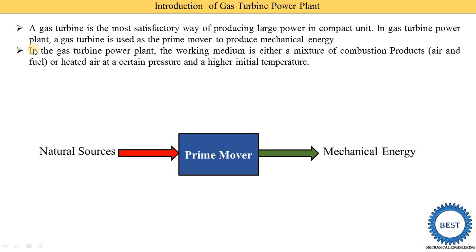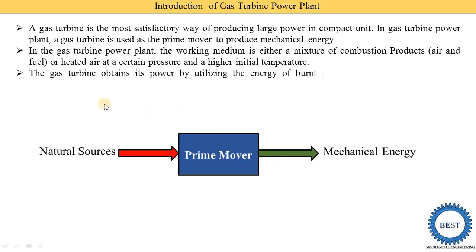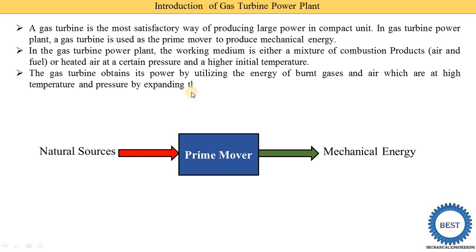When we burn the fuel, some gas is produced — that is the mixture of combustion products — or heated air at certain pressure and higher initial temperatures. As a natural source, we supply heated air or air and fuel, and they are converted into mechanical energy. The gas turbine consists of a number of rotary blades, and when we supply this gas it is converted into rotational energy of the blades, producing mechanical energy.